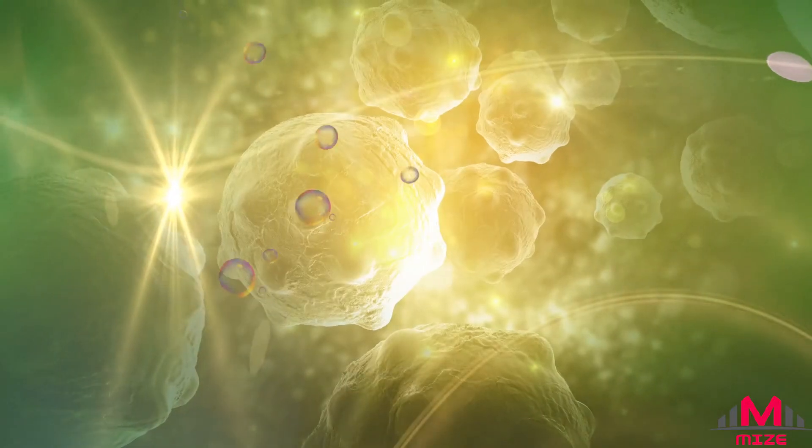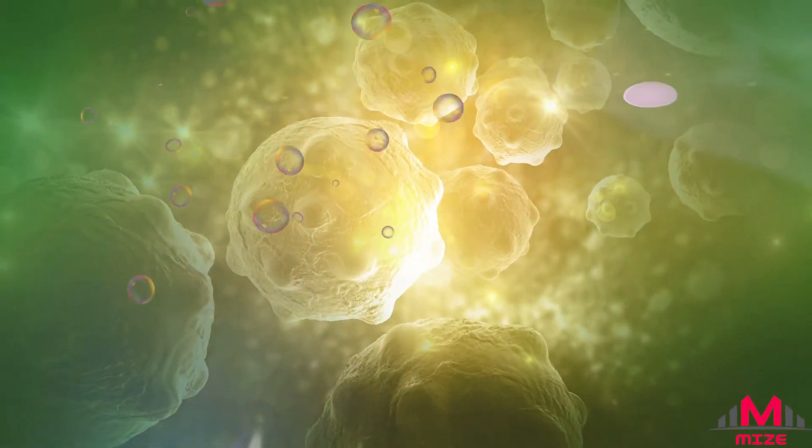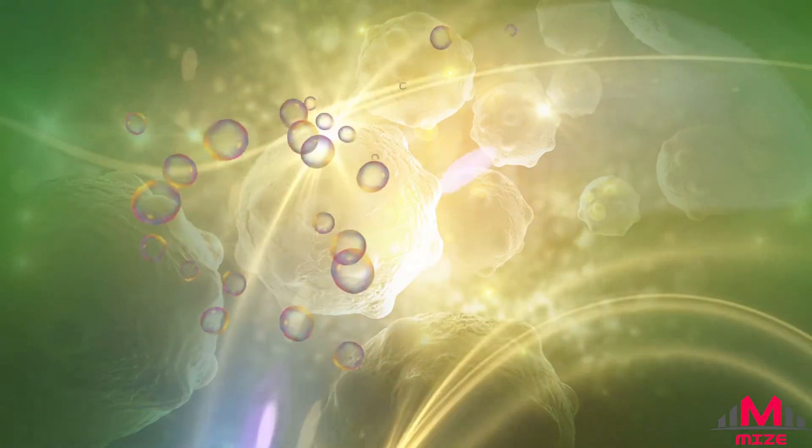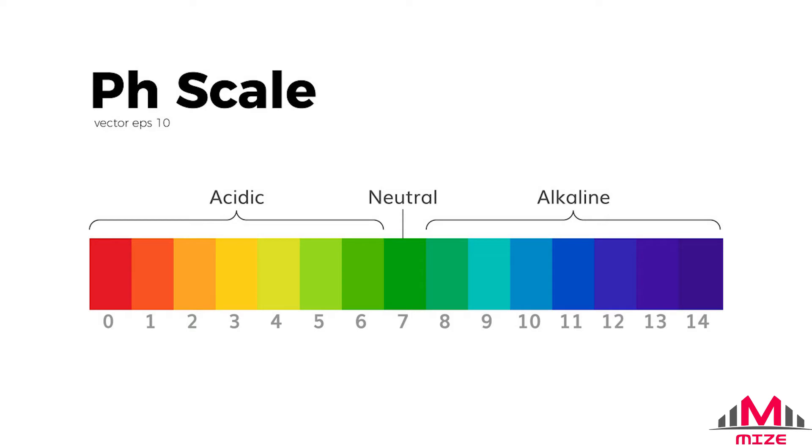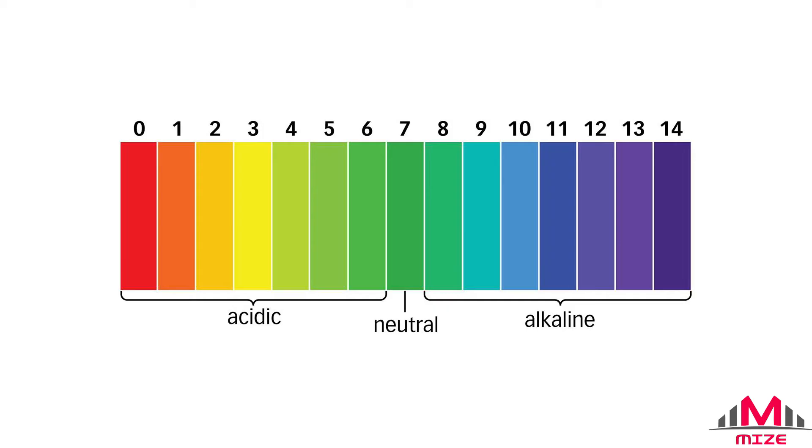Acids have extra hydrogen ions that do not have hydroxide ions to pair up with. For every step down in the pH scale, the concentration of these extra ions increases. Solutions of pH 6 have 10 times the concentration of hydrogen ions as solutions of pH 7, solutions of pH 5 have 10 times as many again, and so on.